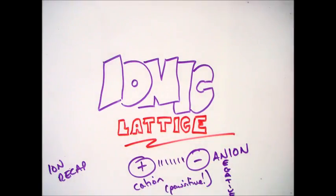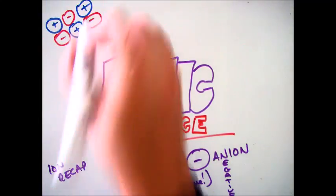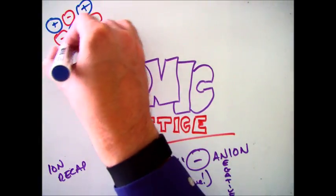Now, you should remember that there is a strong force of attraction between these ions. And that strong force of attraction helps to form what is known as an ionic lattice. As you can see here, I'm drawing the ions. They go in order: positive, negative, positive, negative.